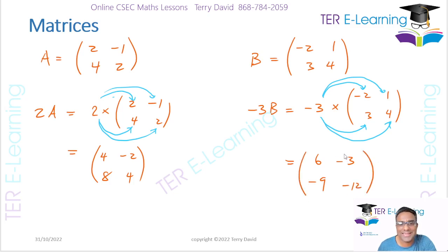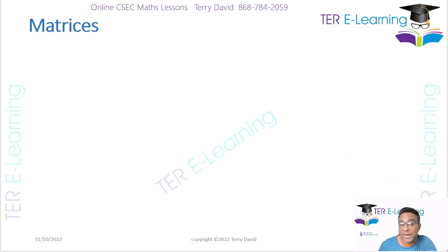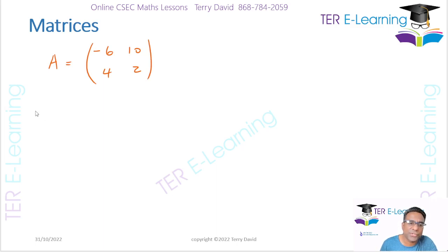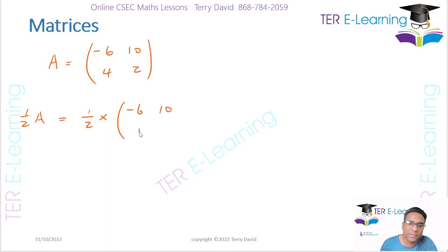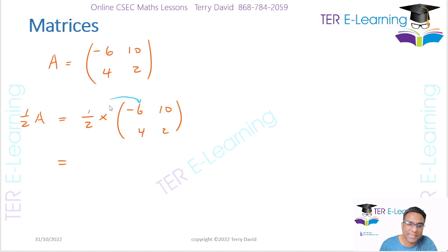We can also have fractions. Let's say E = [-6, 10; 4, 2] and I ask you to work out ½E. Again, this is a scalar multiplication — it's ½ multiplied by the matrix E, which is [-6, 10; 4, 2]. We take that ½ and multiply by every element inside of that matrix.